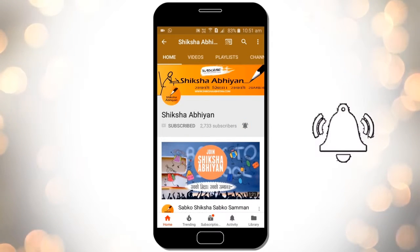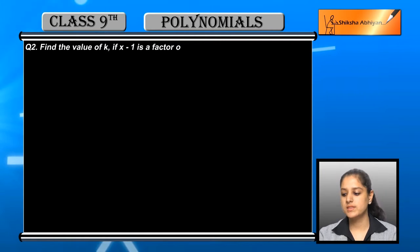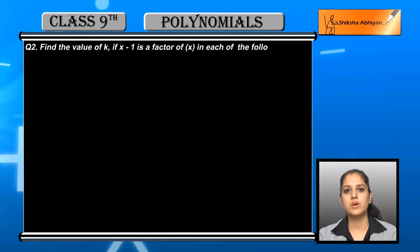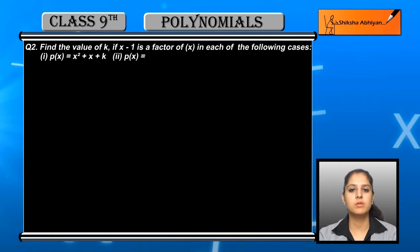Now the next question is: Find the value of k if x minus 1 is a factor of p(x) in each of the following cases.